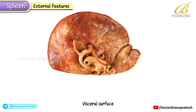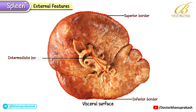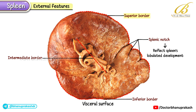Now let's turn our attention to the visceral surface of the spleen. In this view, you can clearly see the three borders: the superior, the inferior, and the intermediate borders. Notice again the splenic notches along the superior border, which, as we discussed before, reflect the spleen's lobulated development.